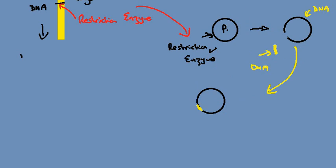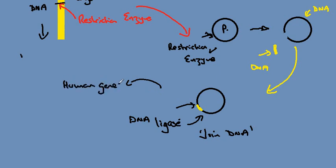It's then necessary to complete the process by applying a second enzyme which is called a DNA ligase enzyme which will join the DNA. This combination then of the human gene and the plasmid DNA is known as recombinant DNA.